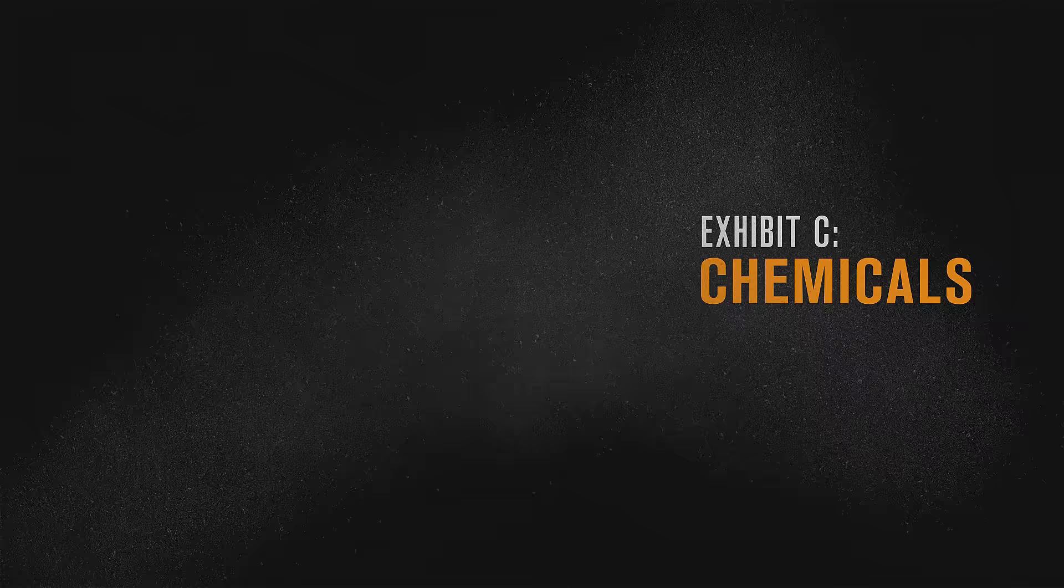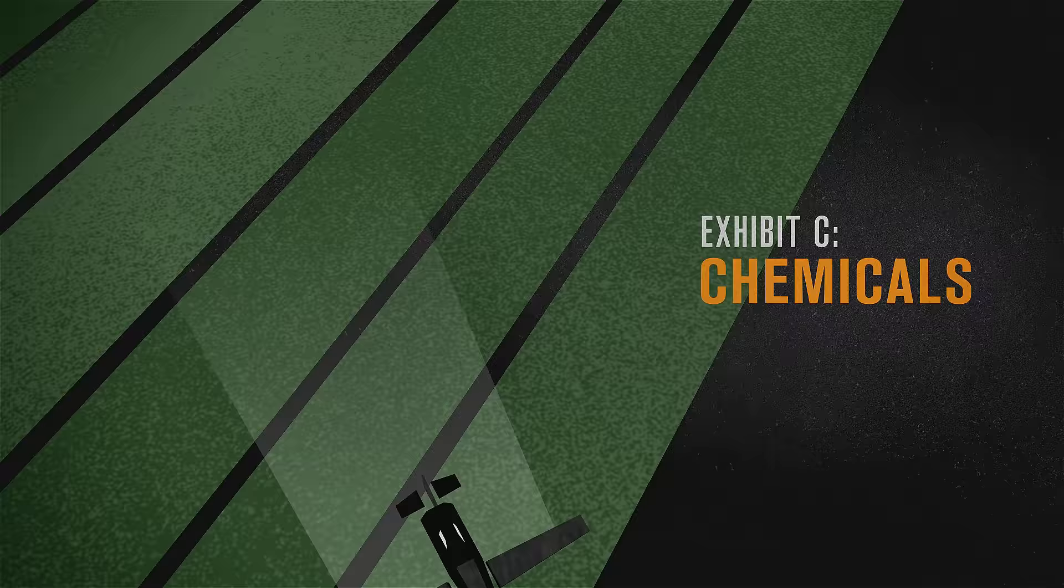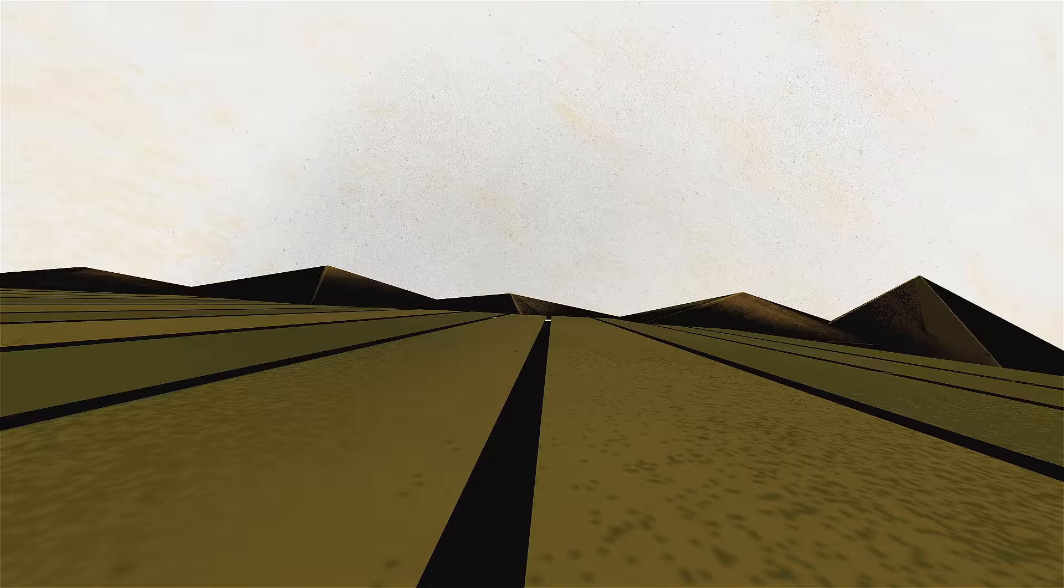Exhibit C: Chemicals. Pesticides used both on commercial beehives and agricultural crops to ward off parasites could be getting into the food and water that honey bees consume. Researchers have even found that some pesticides damage the honey bee's homing abilities.